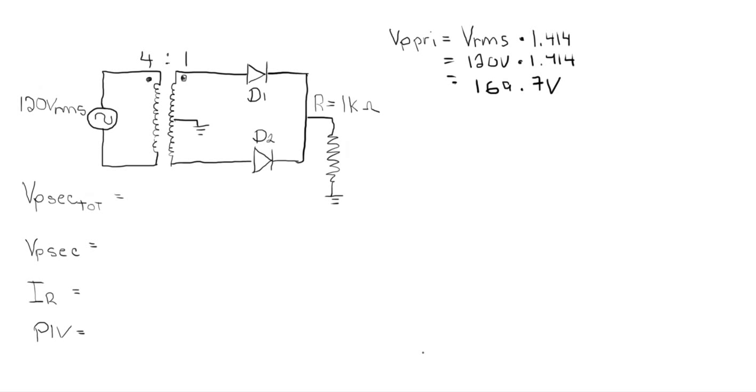In the book, they're asking us to find the secondary, the total secondary voltage. So the total secondary will be across the entire secondary, so that's going to be simply the turns ratio. So we're going to take V secondary, and I'm going to call it total, because it's the whole thing.